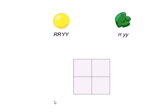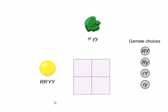From the choices given, select the correct gametes to place on the two sides of the Punnett square.